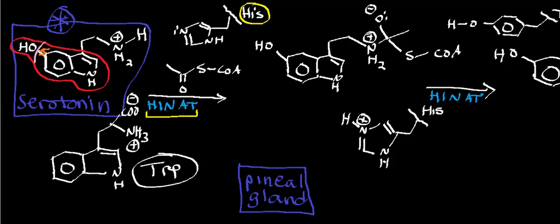This amino acid shown here is L-tryptophan. Tryptophan is what we call an essential amino acid — if you watched the video on serotonin, you know that tryptophan is essential. What that implies is that we absolutely cannot biosynthesize it; we have to get it through the diet.